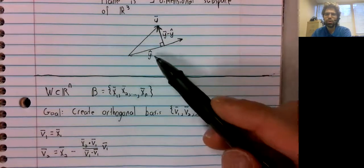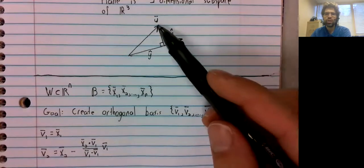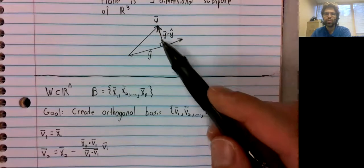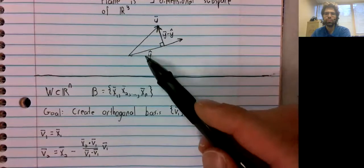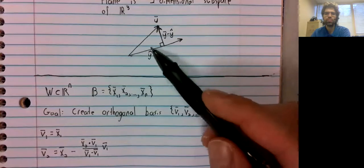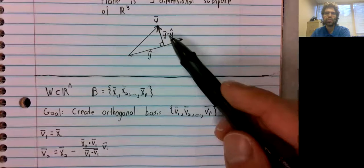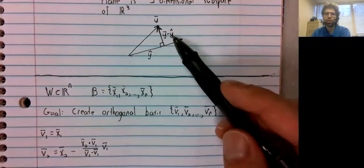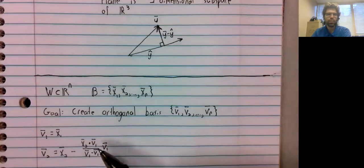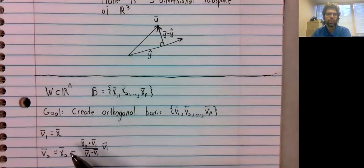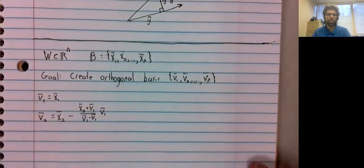I mean, we are calling our vectors different things. But we took the second vector in the basis, we projected it onto the first vector, that projection gives us y hat. And then we subtract to get this orthogonal vector. Exact same thing, we're doing the projection, then we're subtracting to get an orthogonal vector.